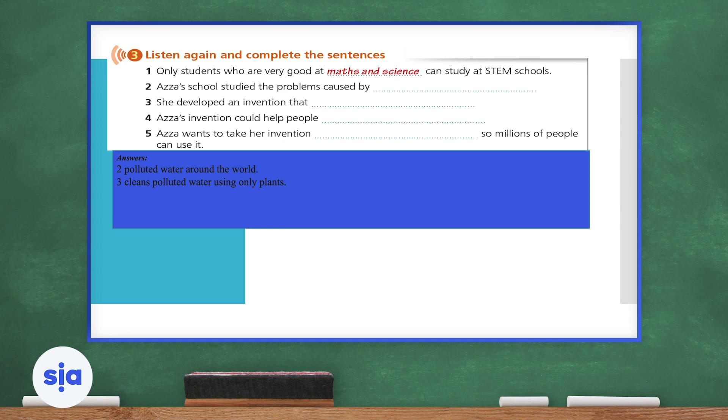Okay, let's move on to number four. Azza's invention could help people. What do you think it could help people with? Okay, it could help people who live in places that do not have clean water. So if someone is living in an area where the land and the water are polluted, this will help with polluted water specifically. Okay, let's move on to number five. Azza wants to take her invention blank. So millions of people can use it. Where do you think Azza wants to take her invention? Probably all around the world. It's important for her to make sure many people can use her invention to clean polluted water.